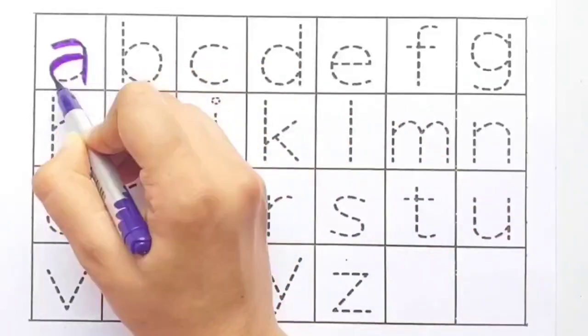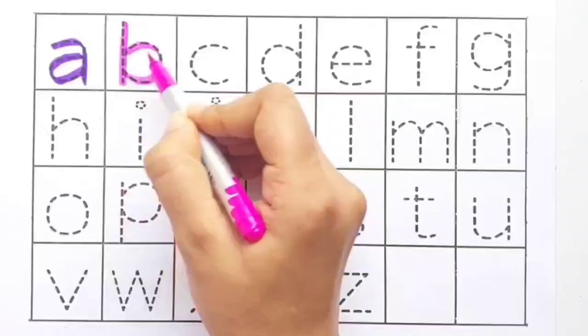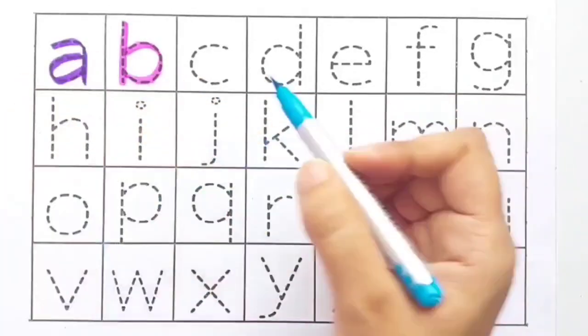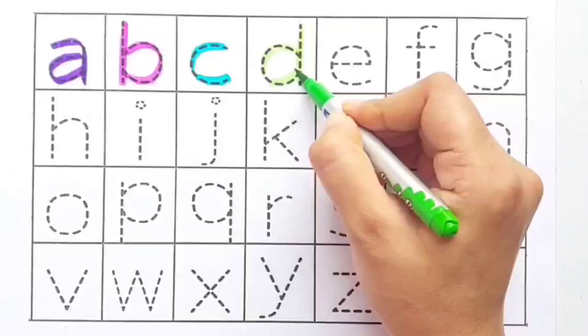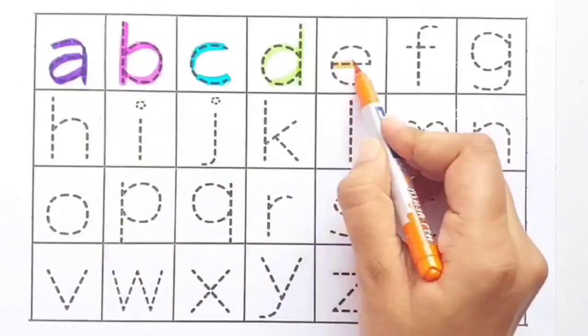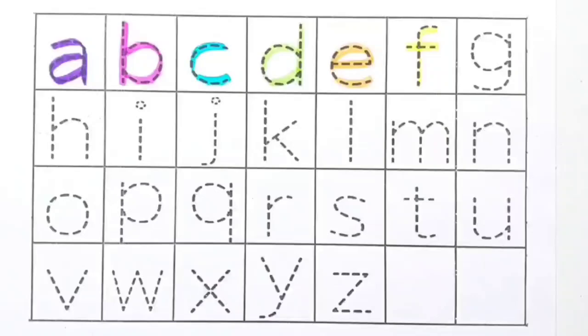A for apple. B for ball. C for cat. D for dog. E for elephant. F for fish. G for grapes.